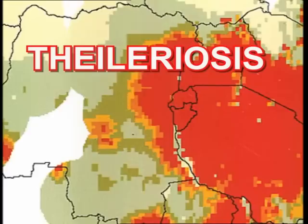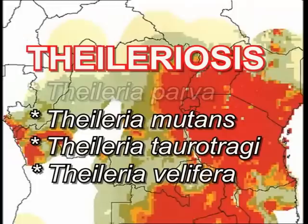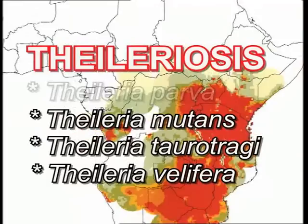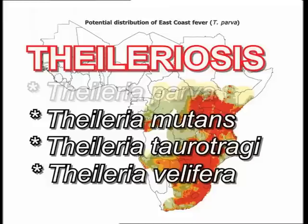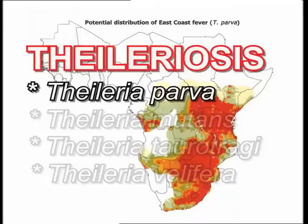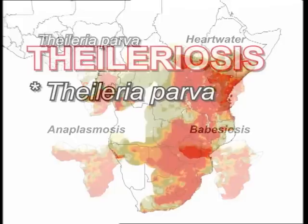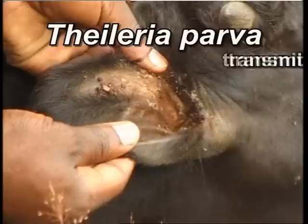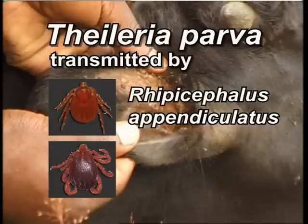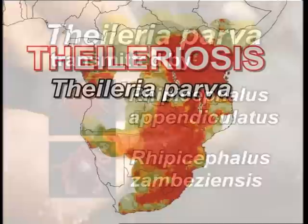Theileriosis is a general term used for infections in cattle with one or more of a number of Theileria species. Some of these may cause only mild or subclinical disease in cattle, so-called benign theileriosis. But by far the most important and pathogenic in Africa south of the Sahara is Theileria parva. Although not the most widespread of the tick-borne diseases, Theileria parva infection is considered by many to be the most important tick-borne disease of cattle in eastern, central and southern Africa, and is transmitted mainly by the brown ear ticks, Rhipicephalus appendiculatus and Rhipicephalus zambeziensis.